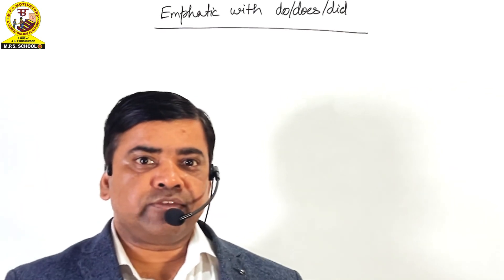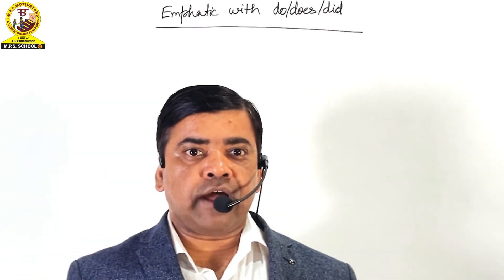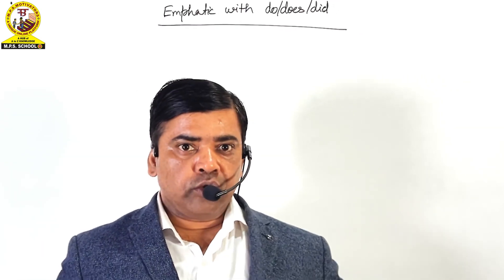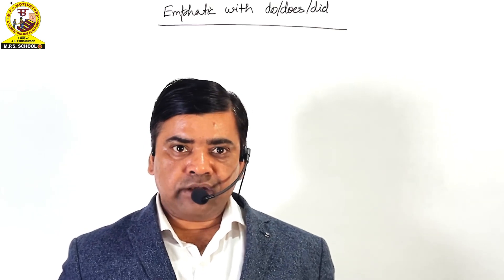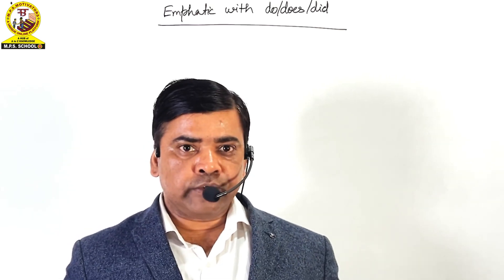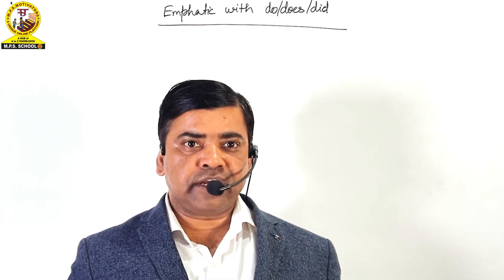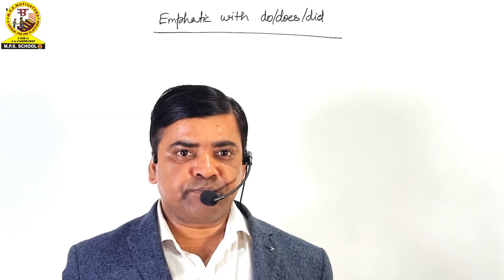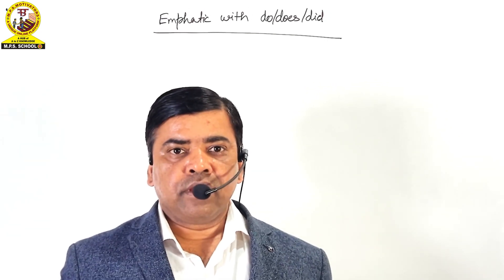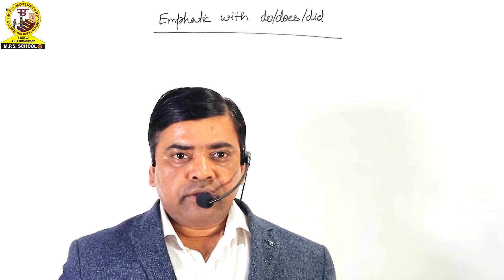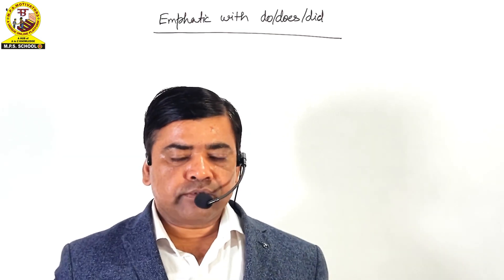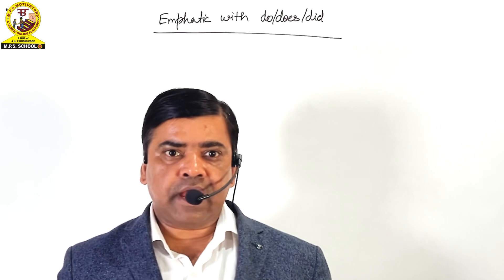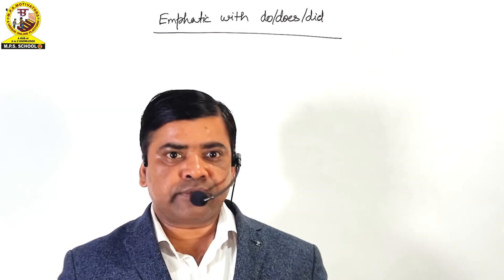Friends, emphatic means jordar. We all know that do and does are used in simple present tense, and did is used in simple past tense, as helping verbs in the formation of negative and interrogative sentences.